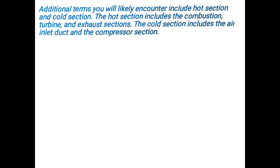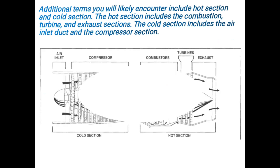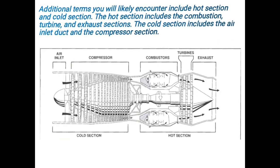Additional terms you will likely encounter include hot section and cold section. The hot section includes the combustion, turbine, and exhaust section. The cold section includes the air inlet duct and the compressor section. Have a look at the figure — air inlet and compressor are included in the cold section, and combustor, turbines, and exhaust are included in the hot section.